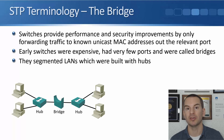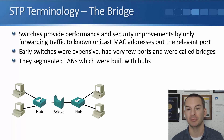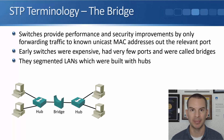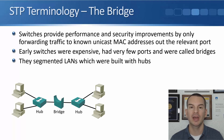Hubs have been replaced — we use switches instead in modern networks. Switches provide performance and security improvements over hubs by forwarding traffic to known unicast MAC addresses only out the relevant port rather than flooding it everywhere. But early switches were expensive, had very few ports — commonly only two ports — and they were called bridges.